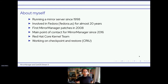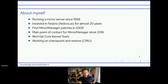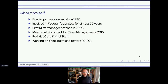I also want to tell the Fedora community what has happened in the last few years since my last presentation about Mirror Manager. I'm actually running a mirror server since 1998. One of the first things I mirrored was ftp.redhat.com. I've been involved in Fedora for almost 20 years, was involved in Fedora US, and wrote mirror management scripts for Fedora US at the time — though they were never deployed. I'm the main point of contact for Mirror Manager since 2016, and I work at Red Hat in the core kernel team, mainly on Checkpoint Restore and getting it into container runtimes, container engines, and Kubernetes.